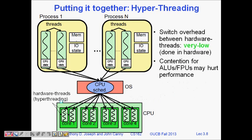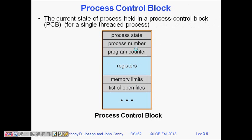With four cores running four threads at a time, if hyper-threading is also enabled, each core can run multiple threads, giving a parallelism of eight threads running at a time. This is called hyper-threading.